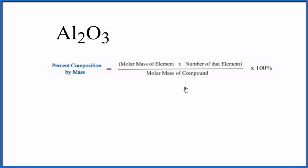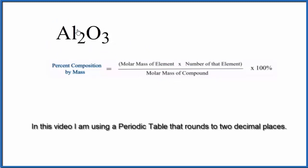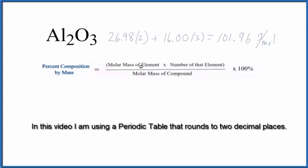So the first thing we need to do, we're going to use this formula here. Let's find the molar mass for the entire aluminum oxide compound. To do that, we add the atomic mass of all the elements up. So we have the molar mass for aluminum oxide.